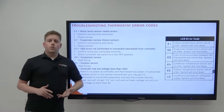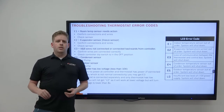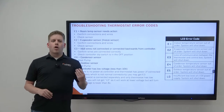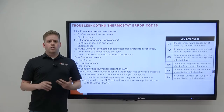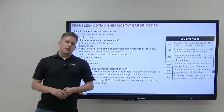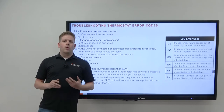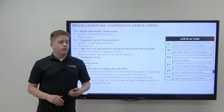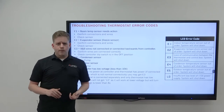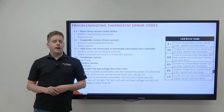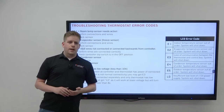E1 is a failure of the indoor temperature sensor. That's going to be located either in the return air or on the physical thermostat, depending on when your system was manufactured. If your sensor is located in the return air, you're going to need a new control box. If your sensor is located on the thermostat, you're going to need a new thermostat.